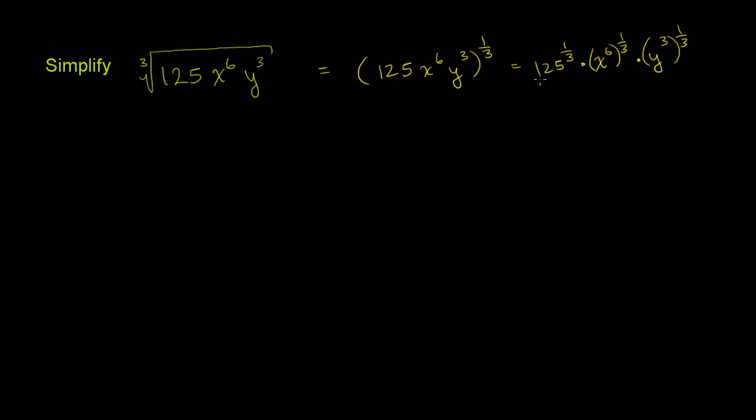125, what's 125 to the 1/3? Let's factor it and see if we have at least three prime factors. So 125 is 5 times 25. 25 is 5 times 5. So 125 is 5 times 5 times 5. If you multiply 5 times itself three times, you get 125.